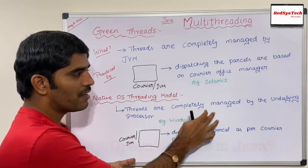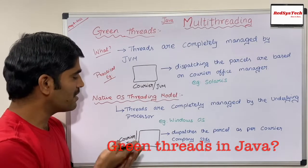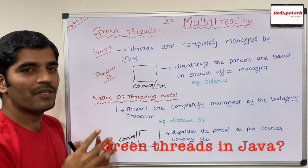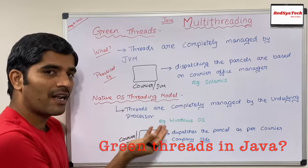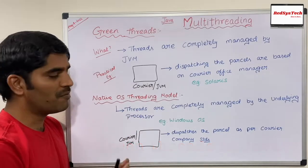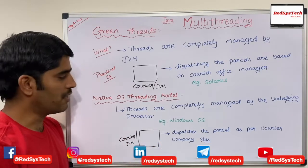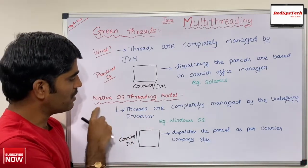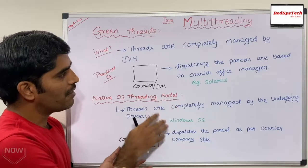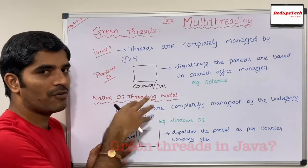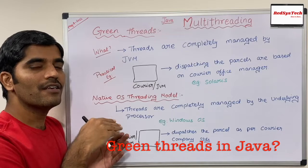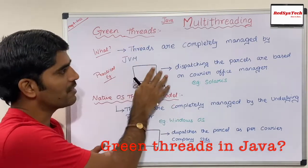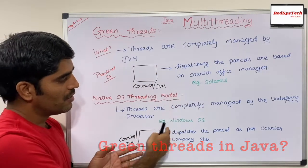The other model is where threads are completely managed by the underlying OS or processor — these are called native OS threads. If someone asks what native OS threading means: 'native' refers to the underlying OS, whether it's Windows, Mac, or anything else. When the processor manages the entire multi-threading system, that model is called the native OS threading model. If it is managed only by the JVM and the underlying processor has no role in controlling thread states or the lifecycle, then that is called the green thread model.